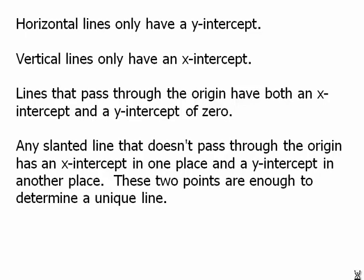That's the only time a slanted line would have its x-intercept and y-intercept at exactly the same point. Usually, if a slanted line doesn't pass through the origin, it has an x-intercept in one place and a y-intercept in another place — two different intercepts — and these two points are enough to determine a unique line.